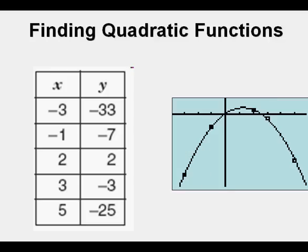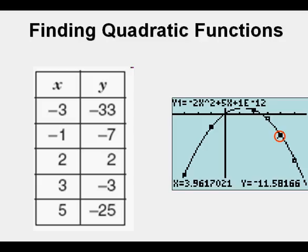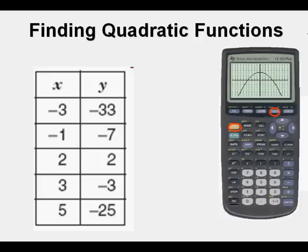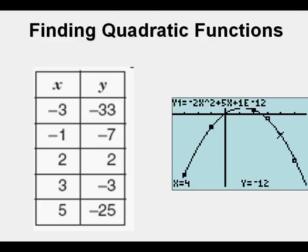And then we graph it, and we can see visually that the function goes through the 5 points, or very close to them. And further, we can go to the trace menu, arrow up 1 to get to the curve. And here we go over to the right, close to the value of 4, we get negative 11.6 for the y value. And so we can then go to second, trace, and value, and we can put x equals 4. And we see that y equals negative 12 for x equals 4.